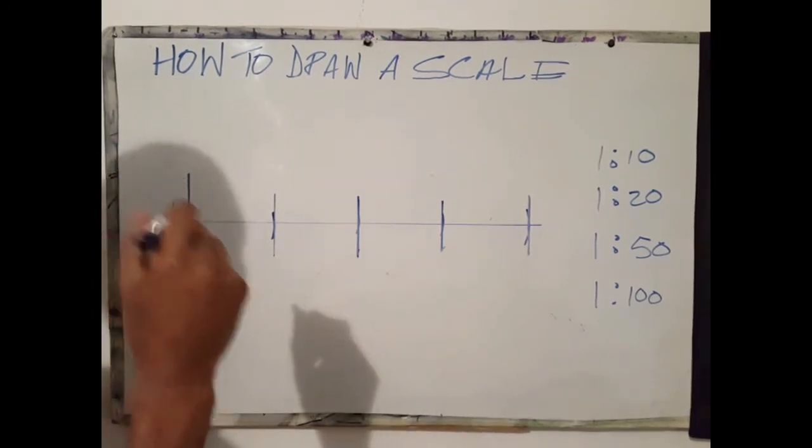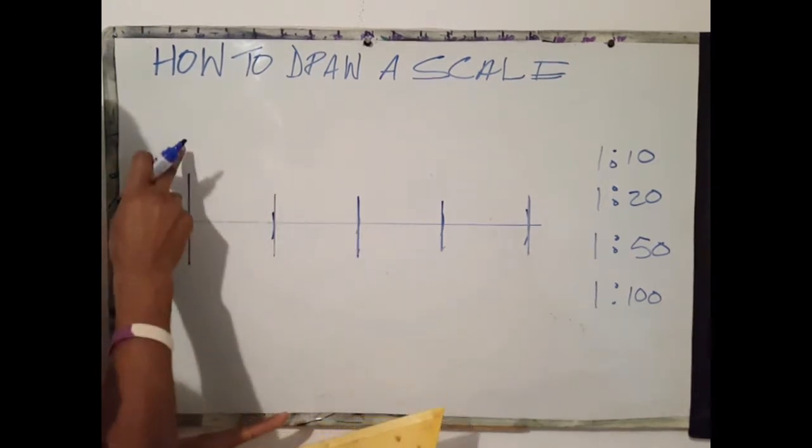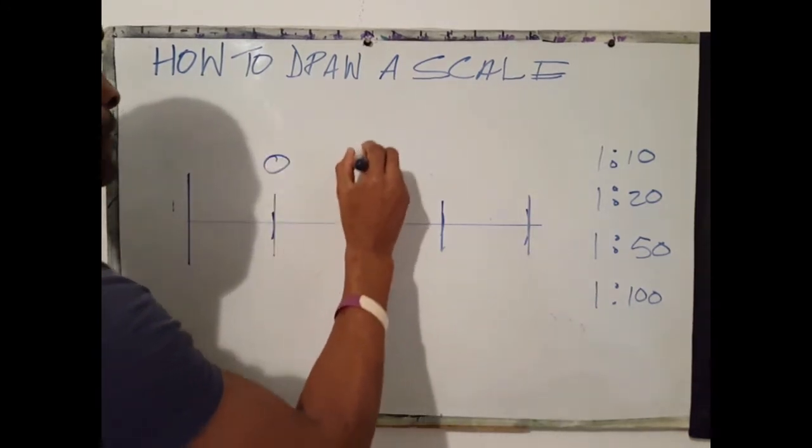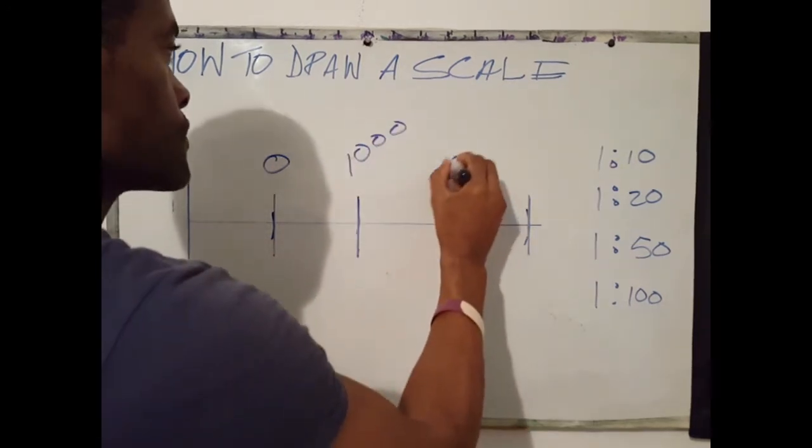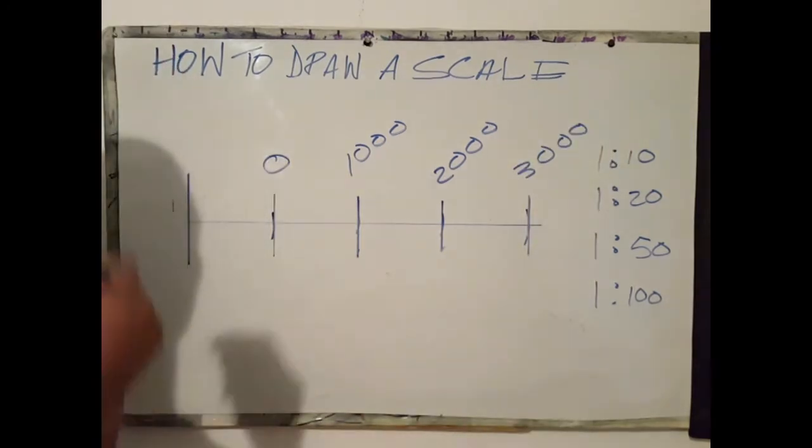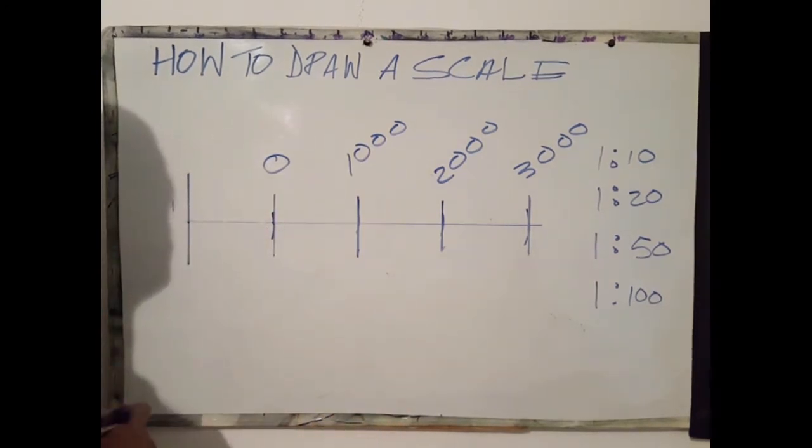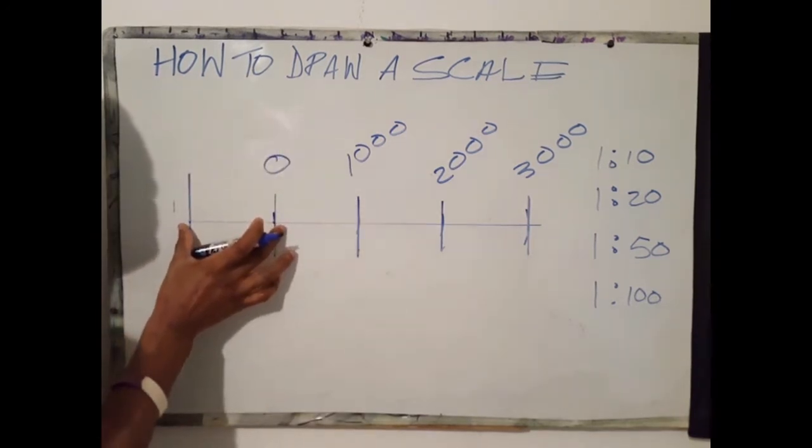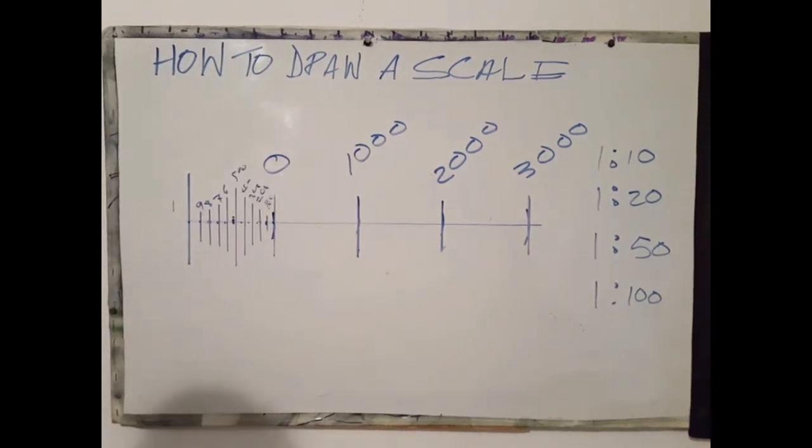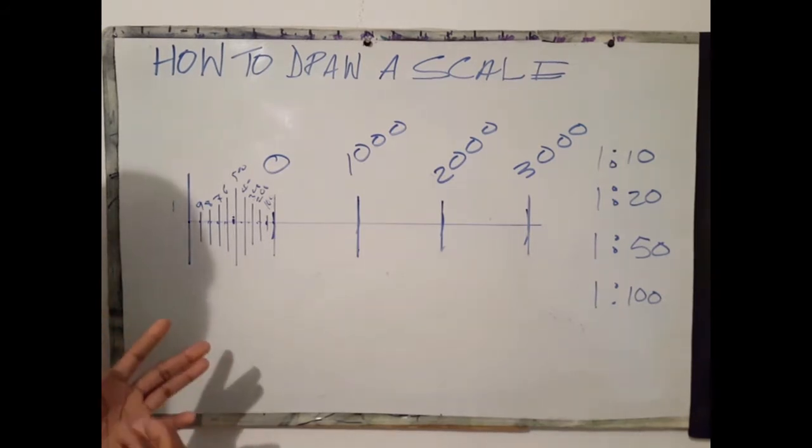Of great importance, we need to note that when you draw a scale, 0 starts at the second increment, not the first increment. So here we have 0, here we have 1000, 2000, 3000. The next step is to divide the first increment into 10 equal parts because we need smaller units. This increment represents the fraction of the 1000.